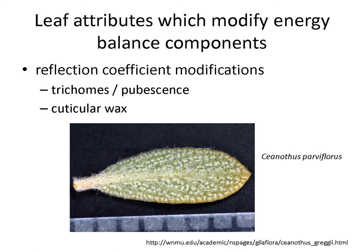What are some leaf attributes which modify these different energy balance components? There are attributes of leaves which can modify how much radiation is reflected from a leaf. Things like trichomes or leaf hairs, as well as cuticular waxes, can both act to greatly increase the amount of radiation reflected from a leaf. This ceanothus leaf has both white wax and lots of trichomes, and you can see the leaf looks white — it's going to reflect a lot of shortwave radiation, so it will have a relatively high reflection coefficient.